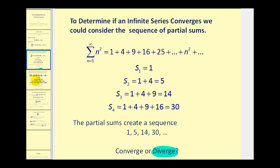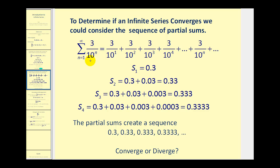Let's take a look at another infinite series: three divided by ten to the power of n. So when n is one, we'd have three divided by ten to the first; when n is two, we'd have three divided by ten to the second, and so on, and then we'd find the sum of these terms. Looking at the partial sums in decimal notation: the sum of the first term is three tenths. The sum of the first two terms is three tenths plus three hundredths, which is 0.33. The sum of the first three terms is three tenths plus three hundredths plus three thousandths, which is 0.333.